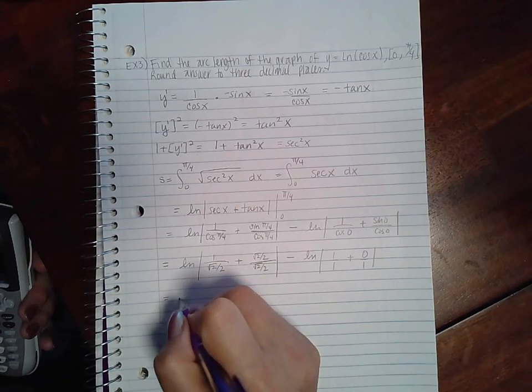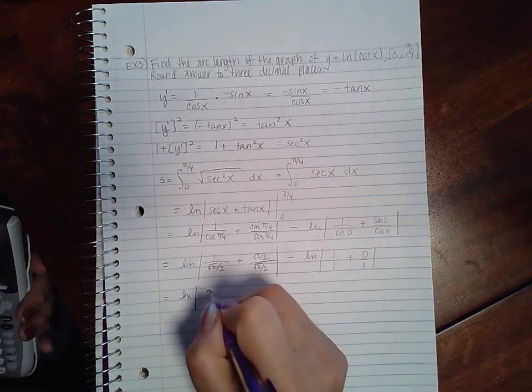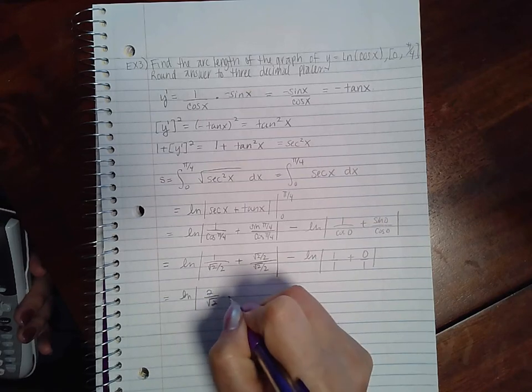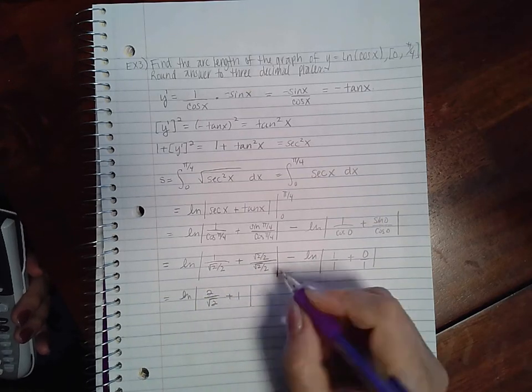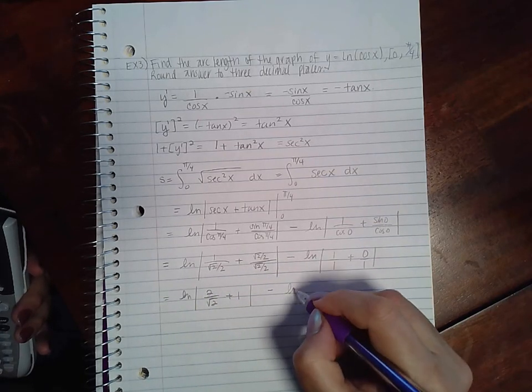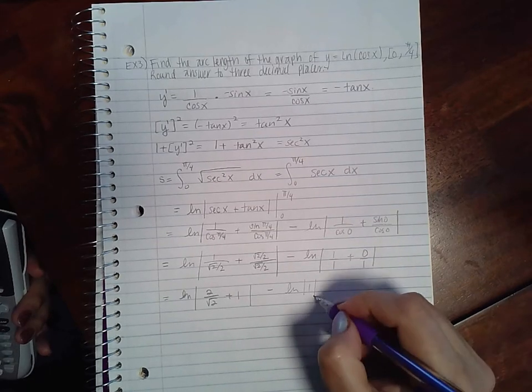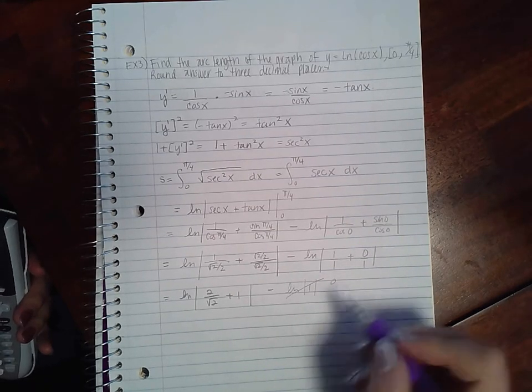So you take the reciprocal of this you get 2 over √2 plus 1 minus ln of 1 because this is just 0 and the ln of 1 is just 0.